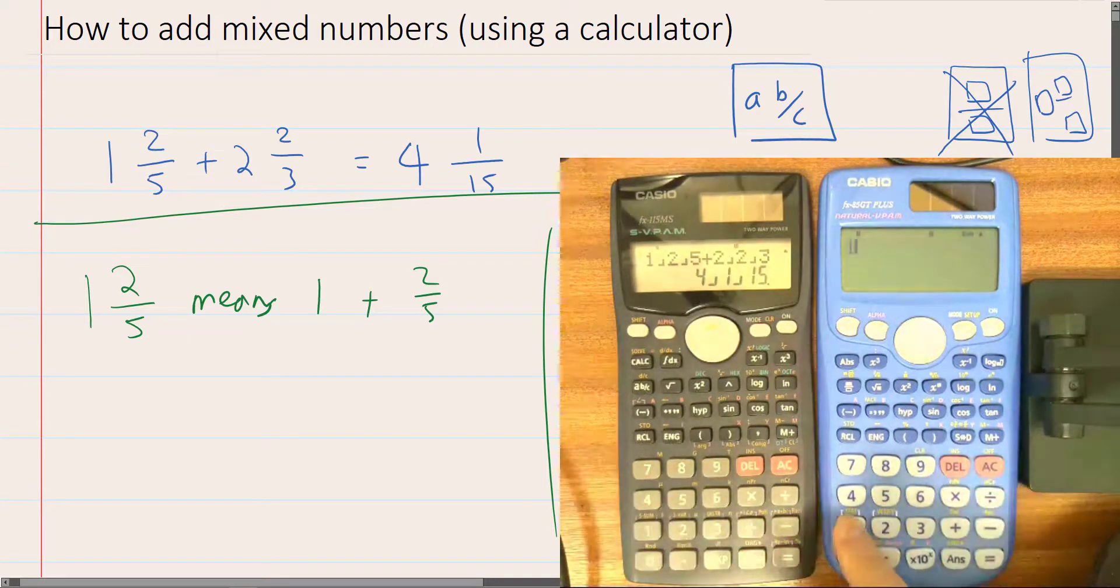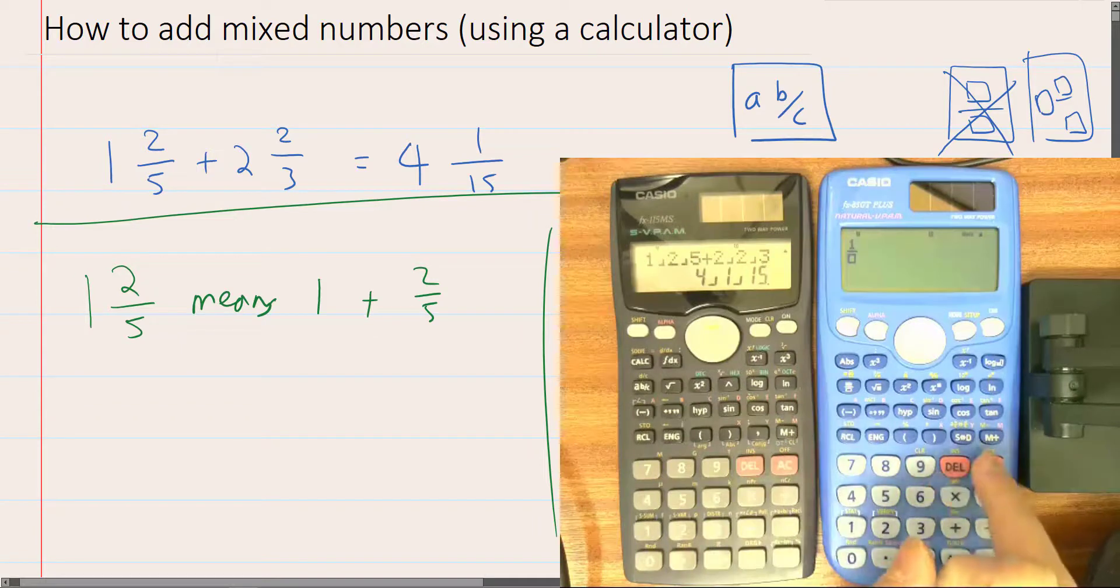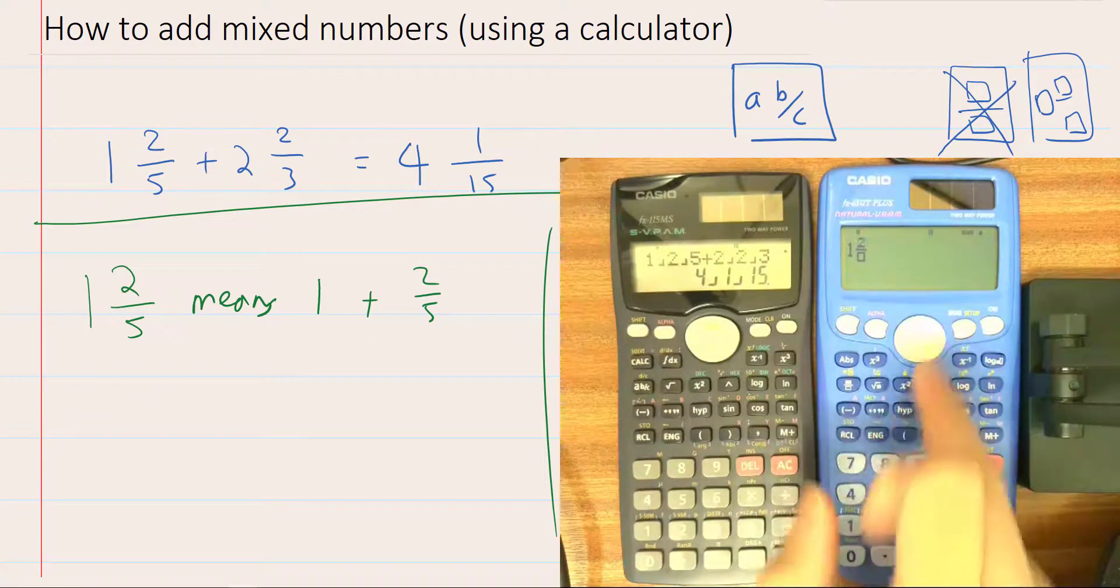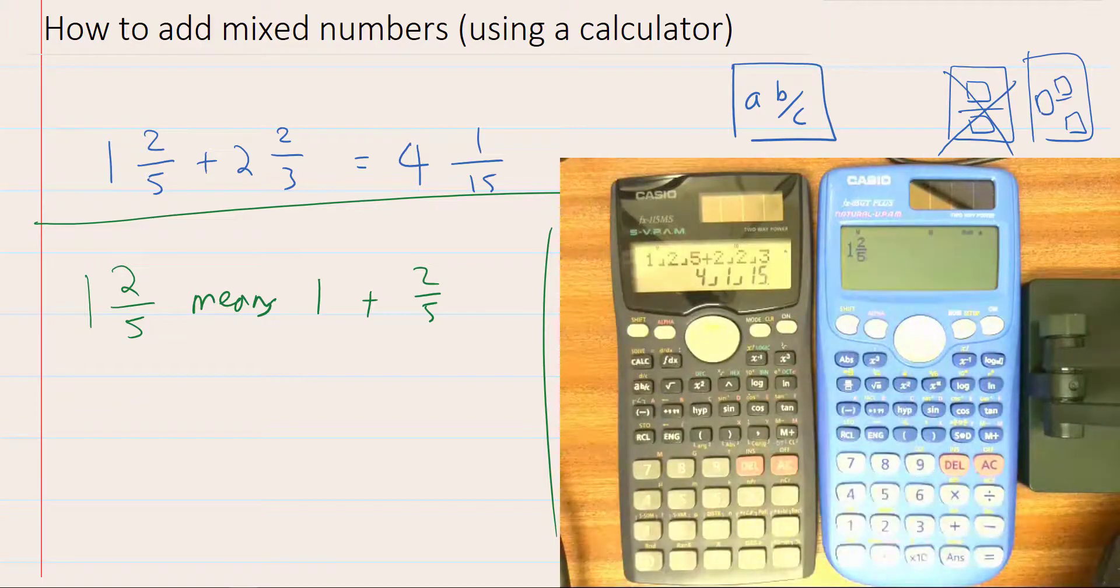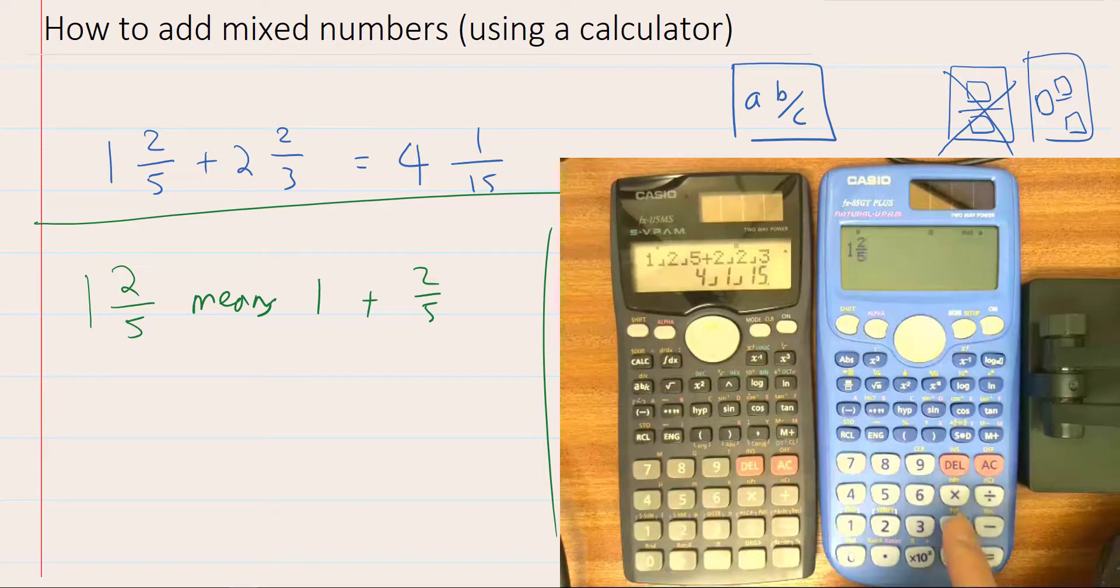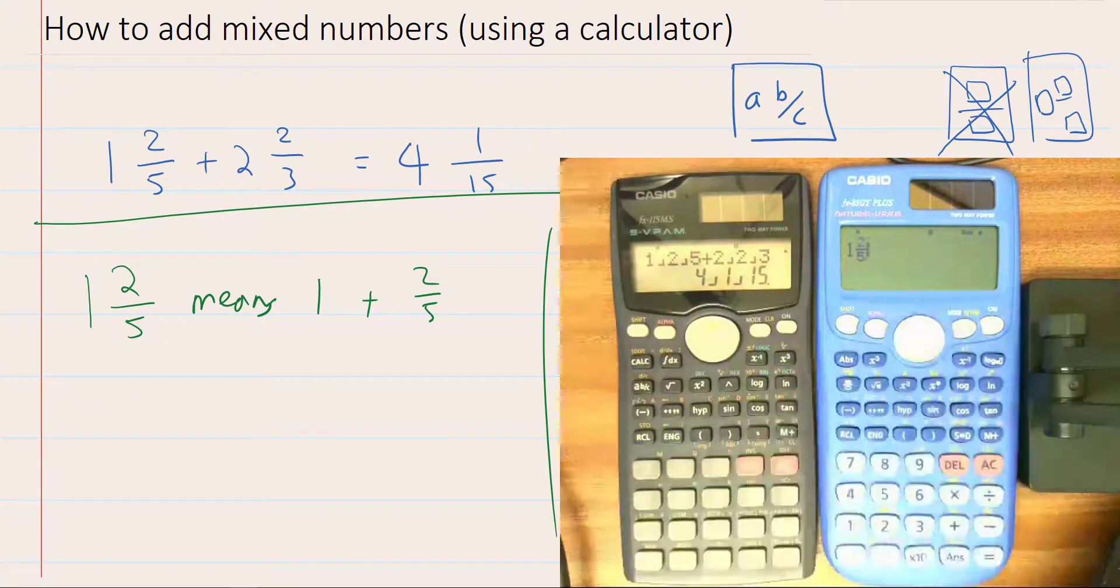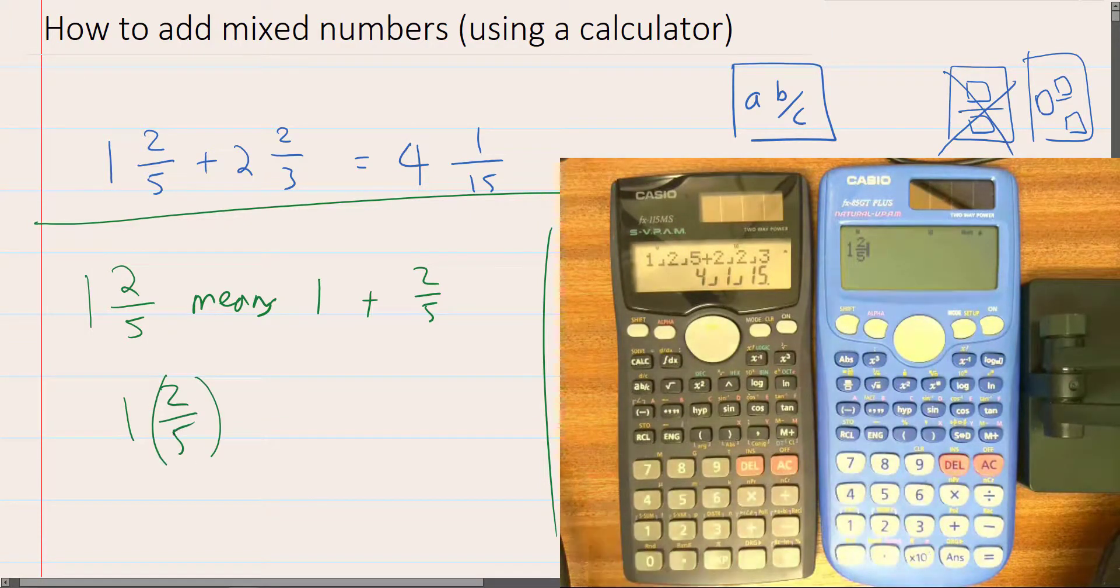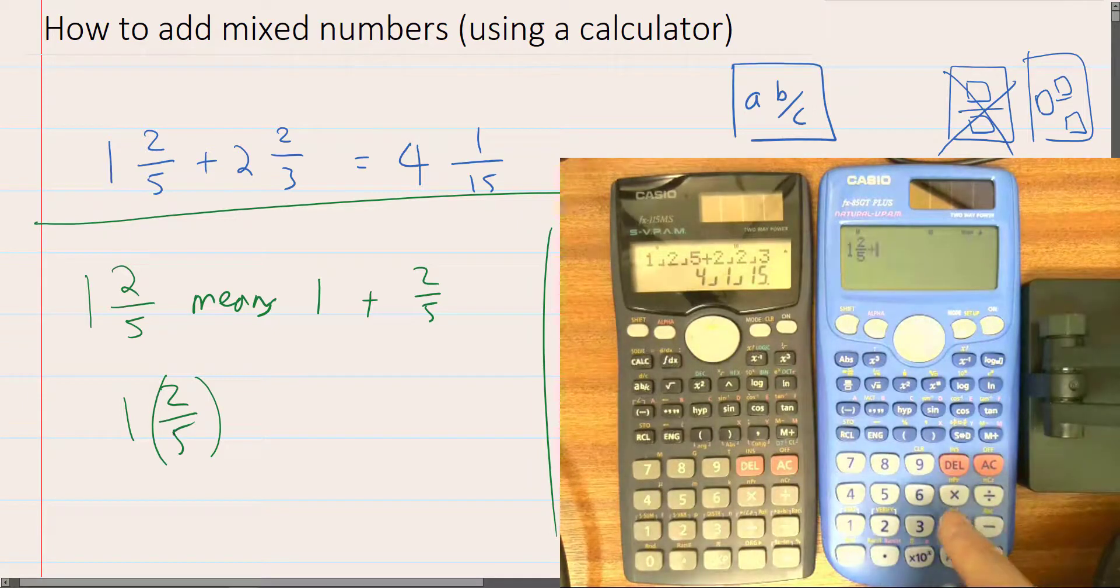But if you type it in the calculator as 1, 2 fifths in the natural view, it's actually doing 1 times 2 fifths as if it was like this. So it's very subtle.